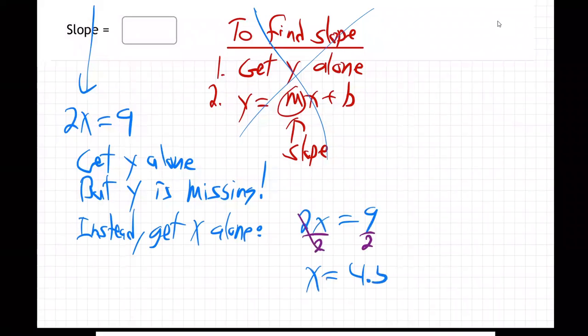x is 4.5, right? So when it comes to the graph, what does that look like?